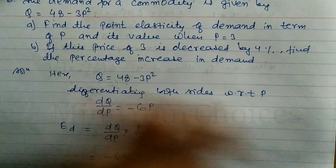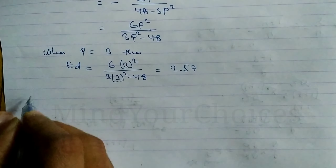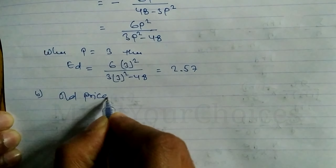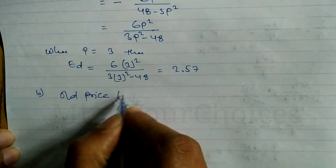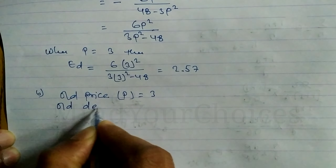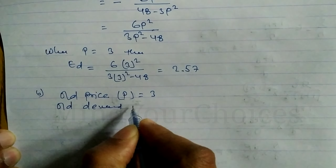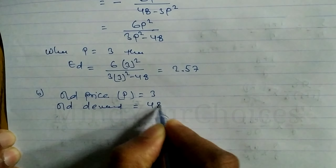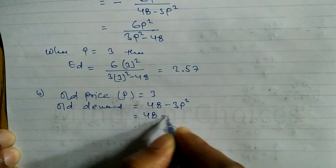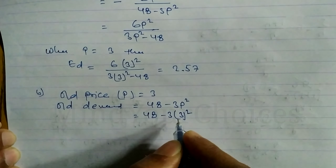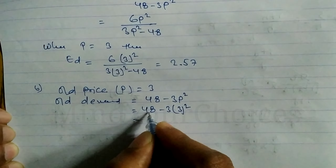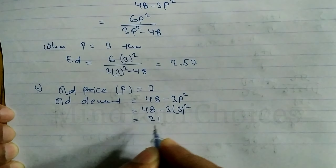For part b: old price p = 3. Old demand: Q = 48 - 3p². Substituting p = 3: Q = 48 - 3 × 3² = 48 - 3 × 9 = 48 - 27 = 21. So old demand is 21.